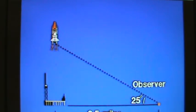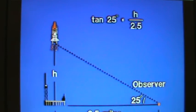Now, we're looking for the height of the shuttle and a right triangle is formed. So we can use the tangent relationship or the tangent ratio from the perspective of the 25 degree angle.